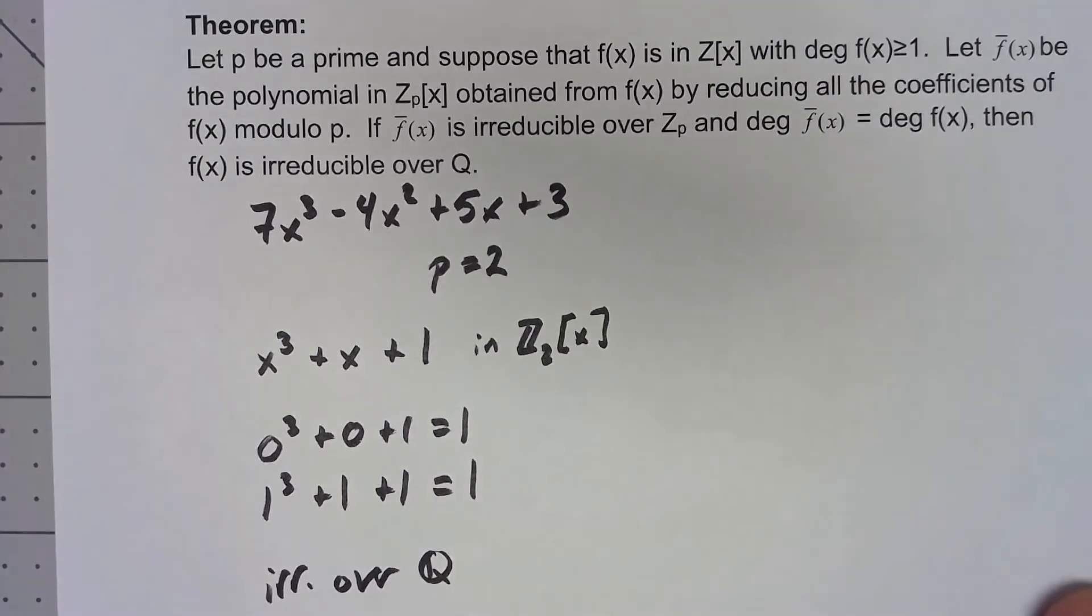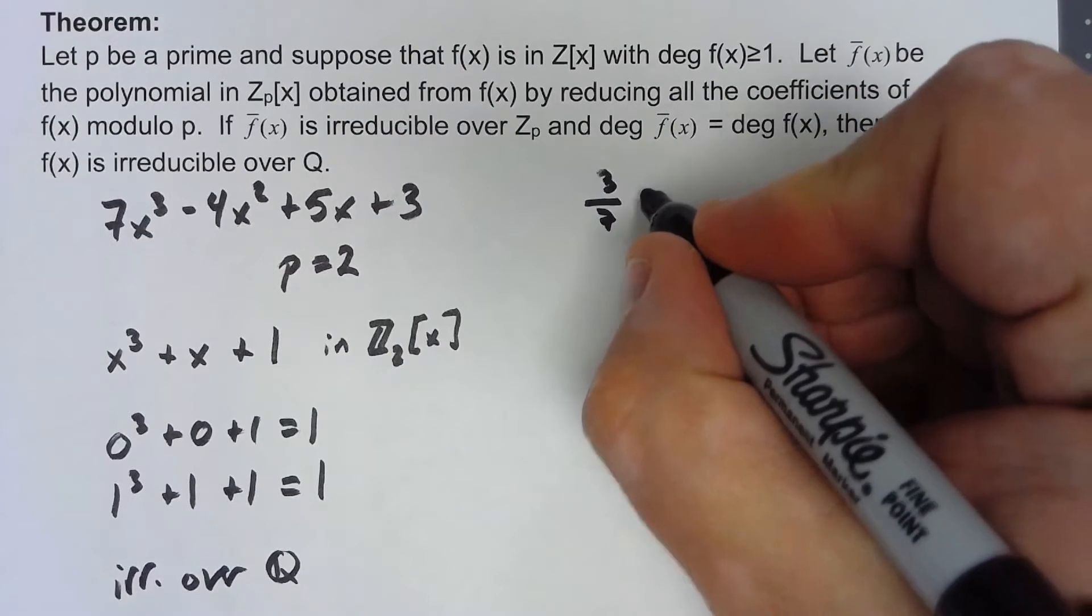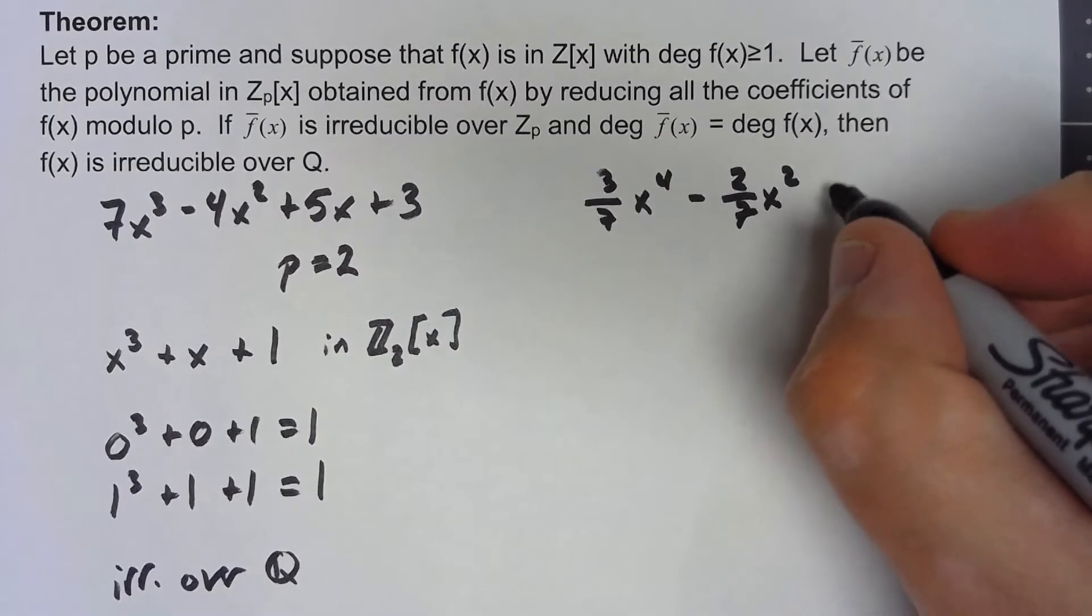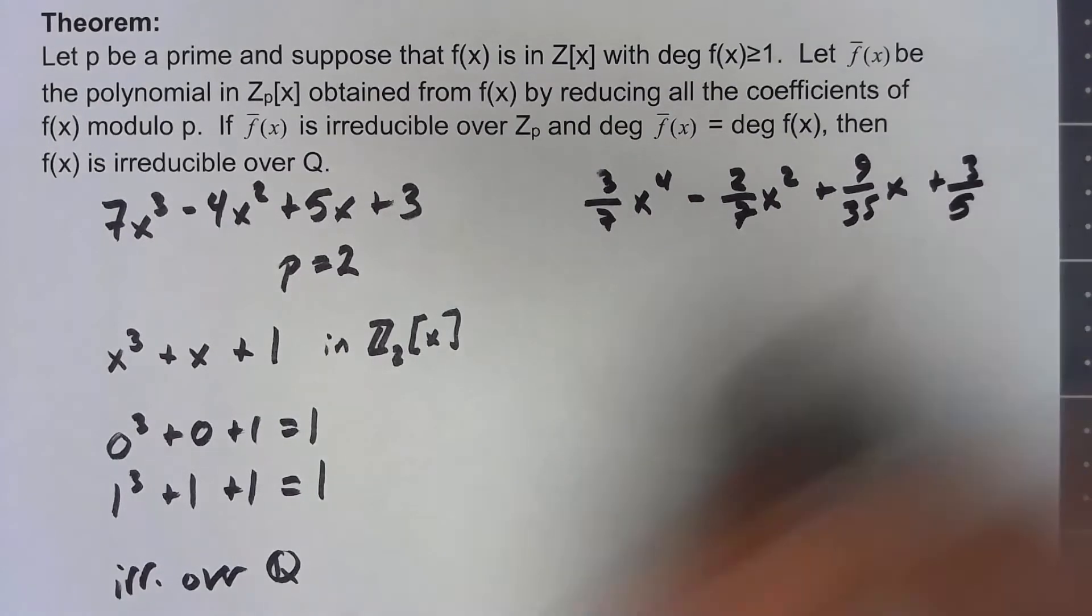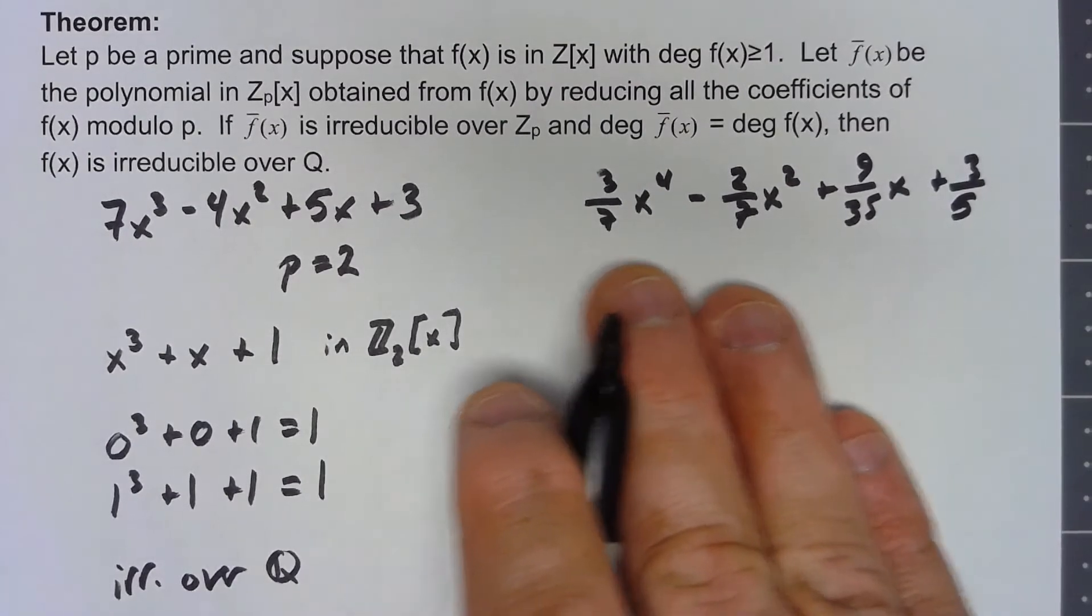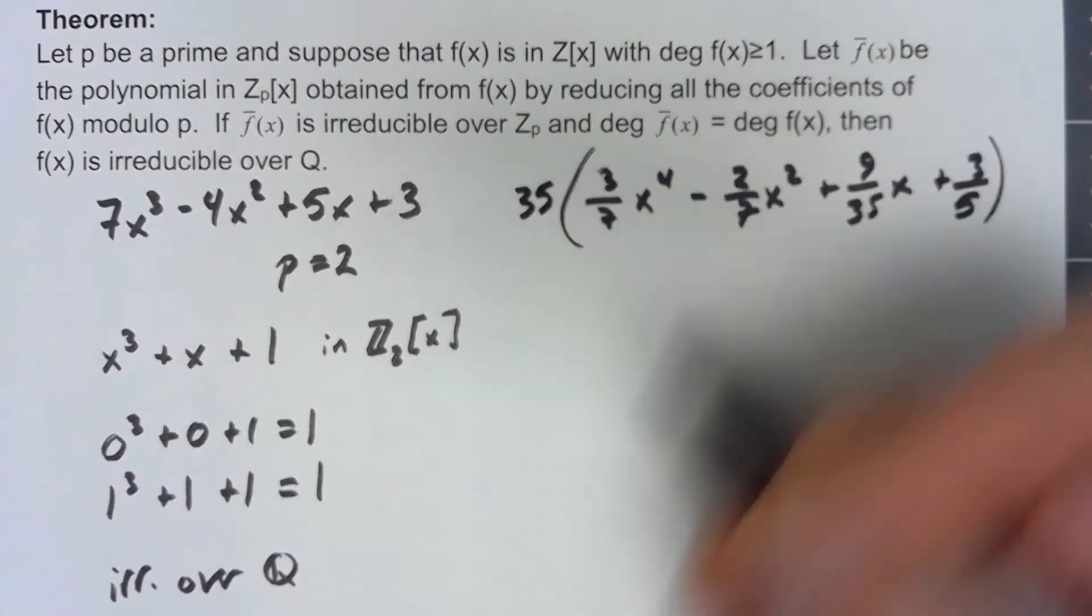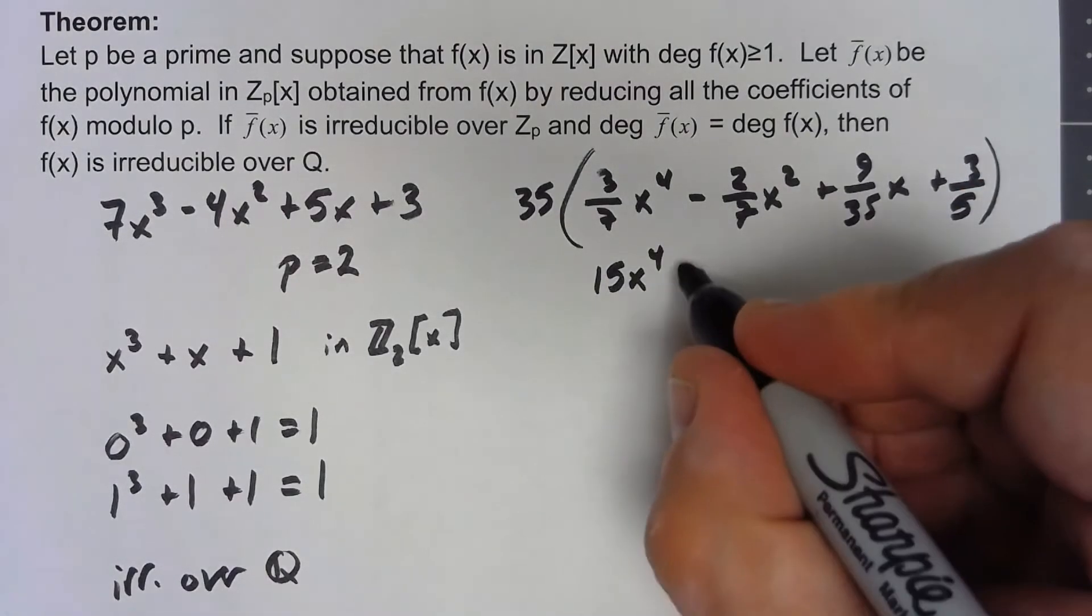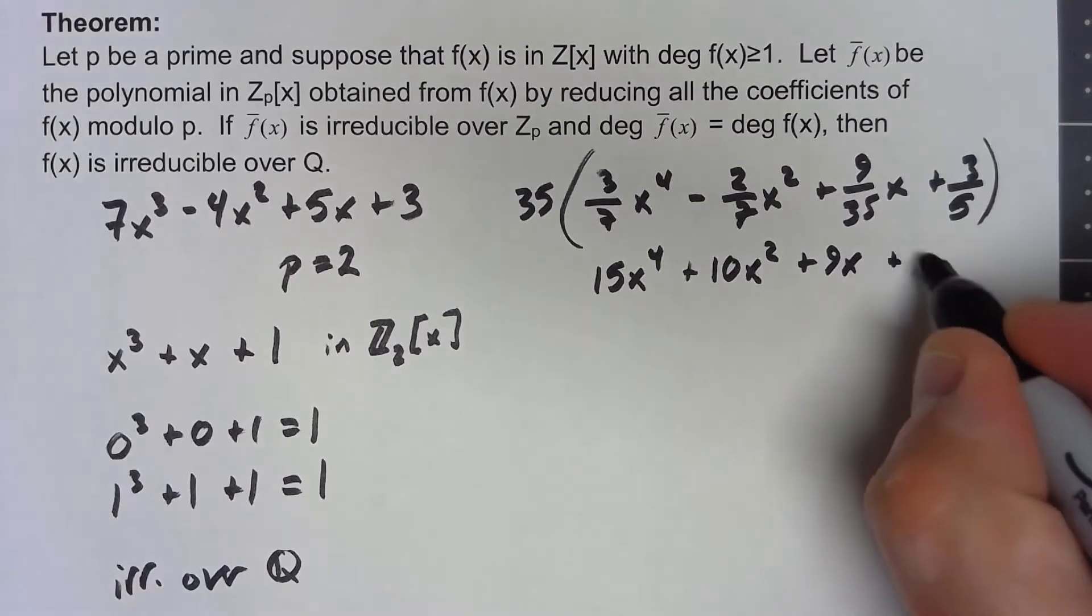Let's take a look at a slightly more complicated example. Let's say I had (3/7)x⁴ - (2/7)x² + (9/35)x + (3/5). So the first thing I can do is go ahead and clear out the denominators. Basically, if I multiply by 35, I get 15x⁴ + 10x² + 9x + 21.